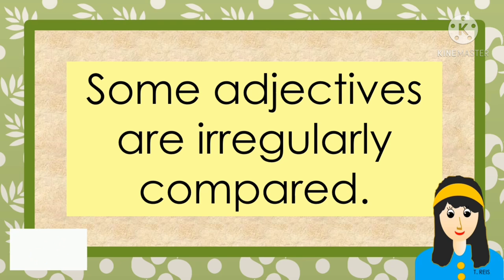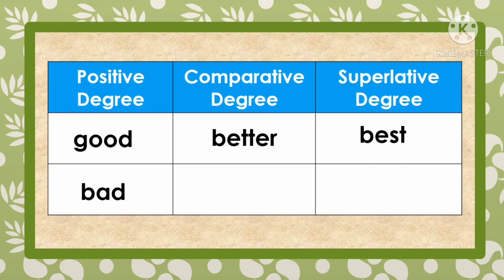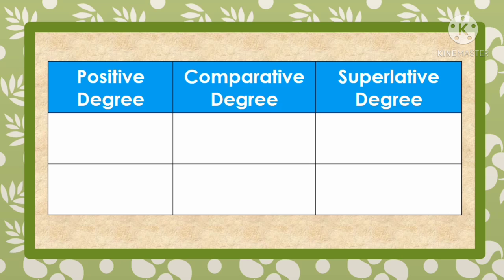Some adjectives are irregularly compared. The word 'good' — comparative degree: 'better'; superlative degree: 'best.' The word 'bad' — comparative degree: 'worse'; superlative degree: 'worst.' Another example: 'ill' — comparative degree: 'worse'; superlative degree: 'worst.' And 'many' — comparative degree: 'more'; superlative degree: 'most.'